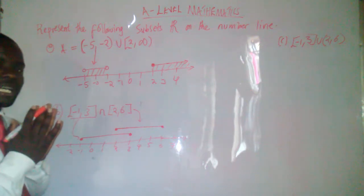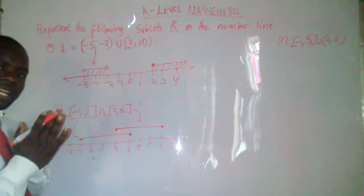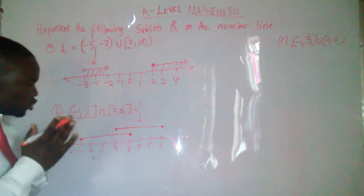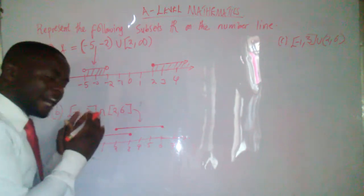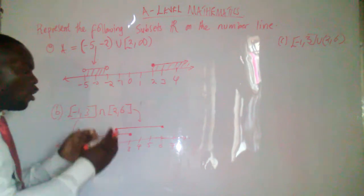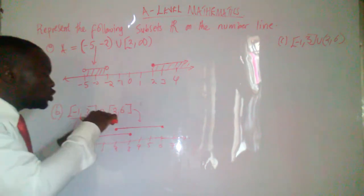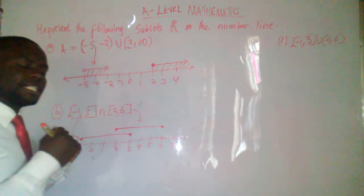So this simply means that we must only shade the intersecting part. How can you know the intersecting part? The intersecting part, you are going to know it by identifying the boundary on the number line where the two lines are crossing each other.